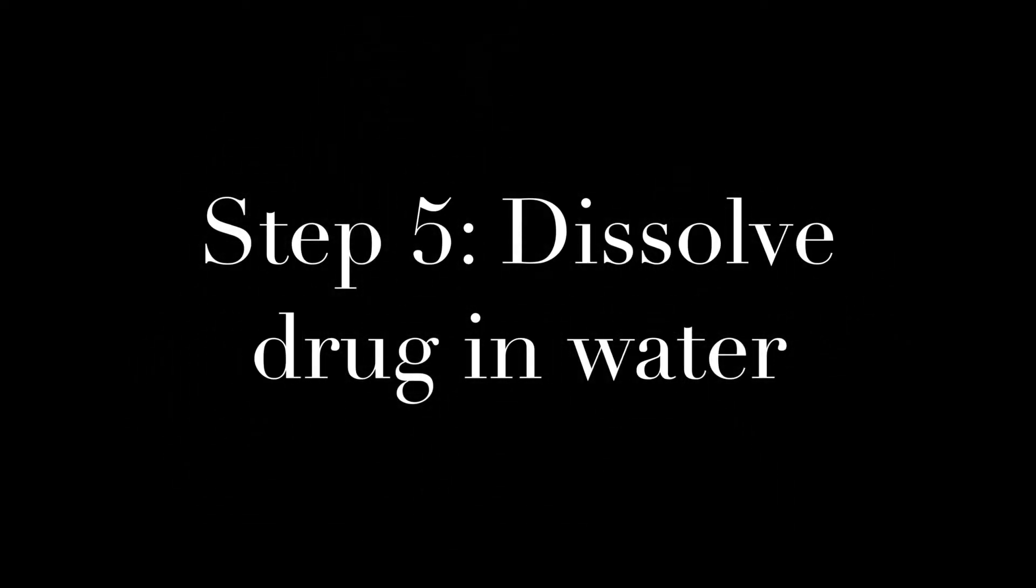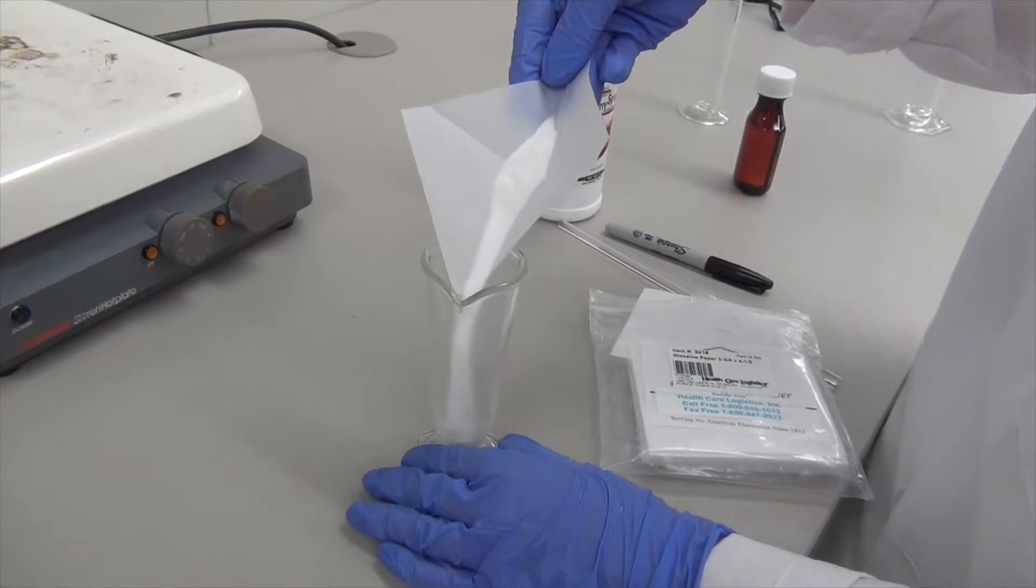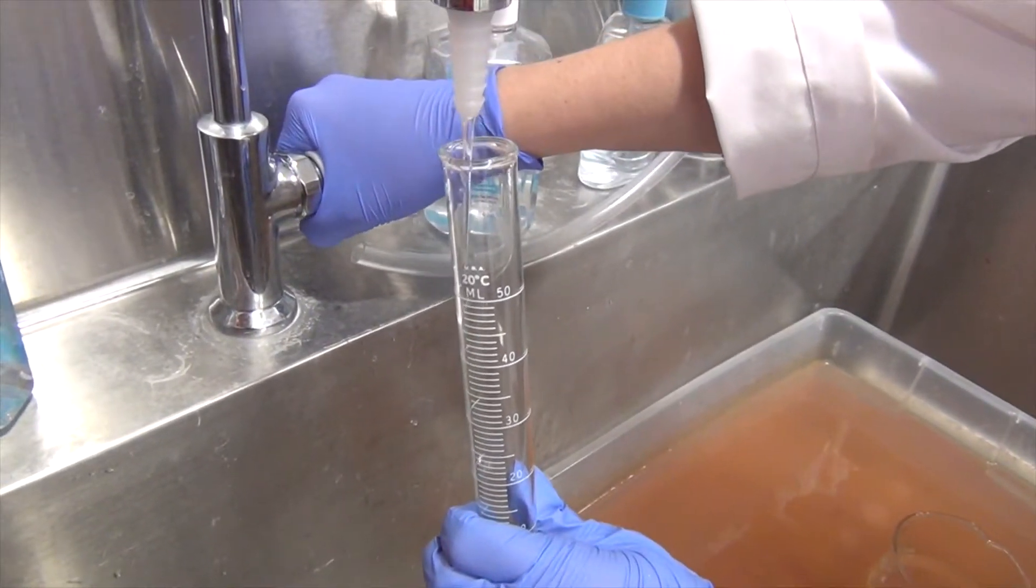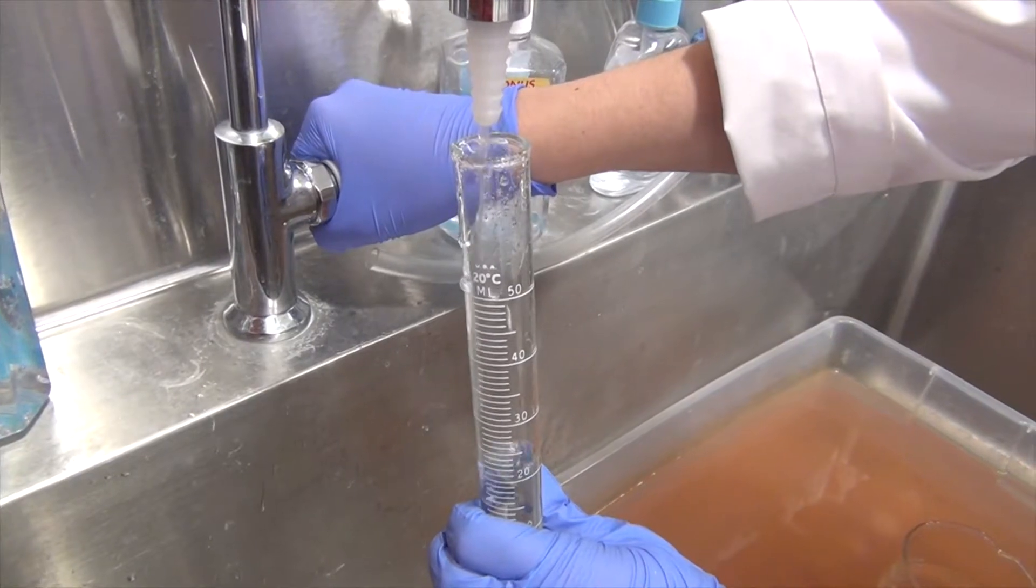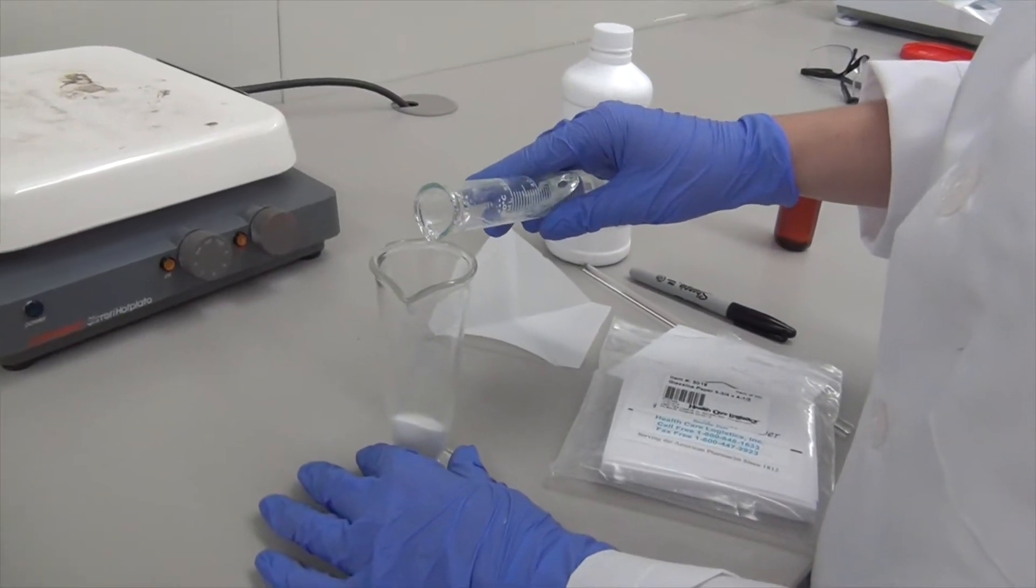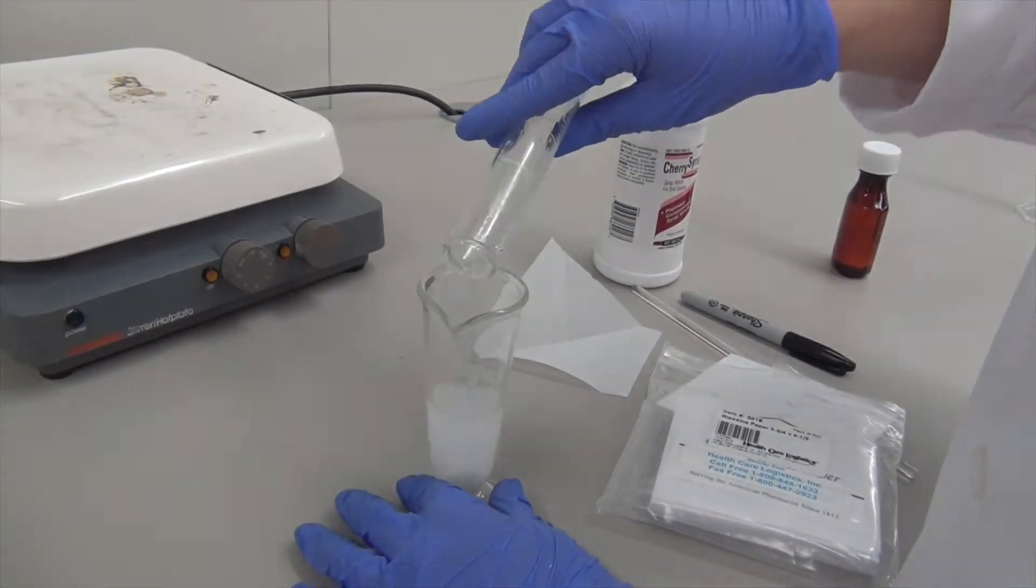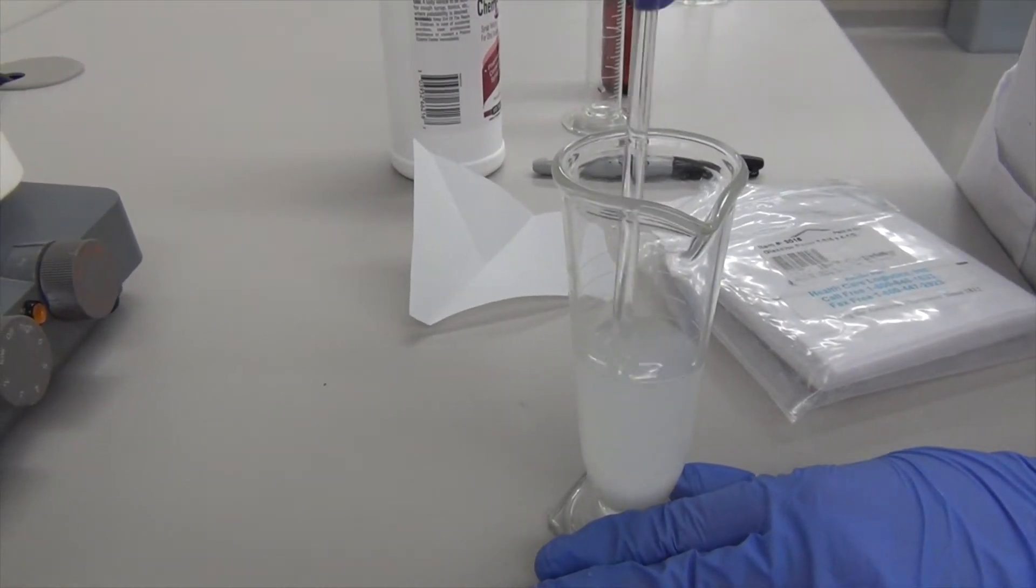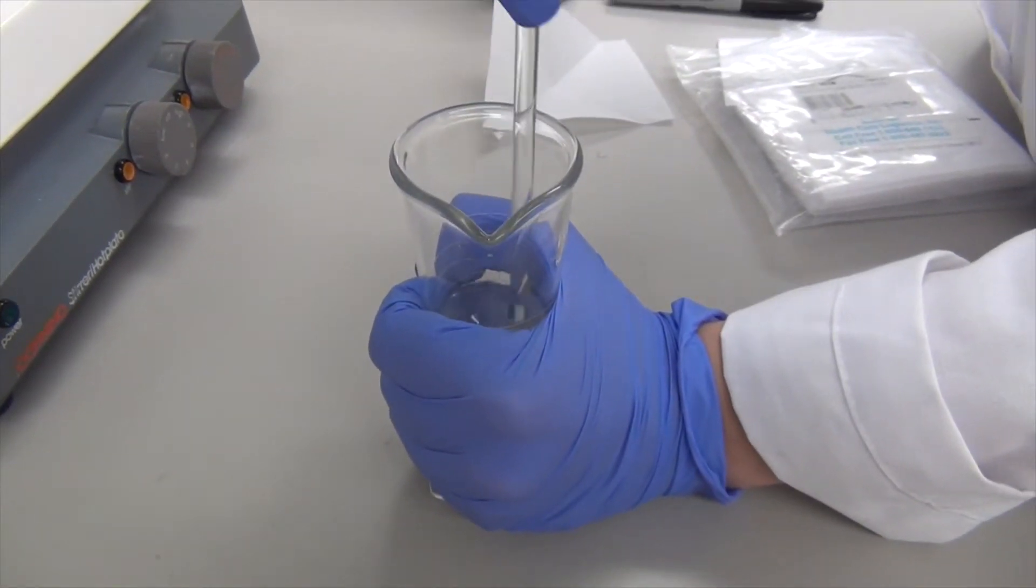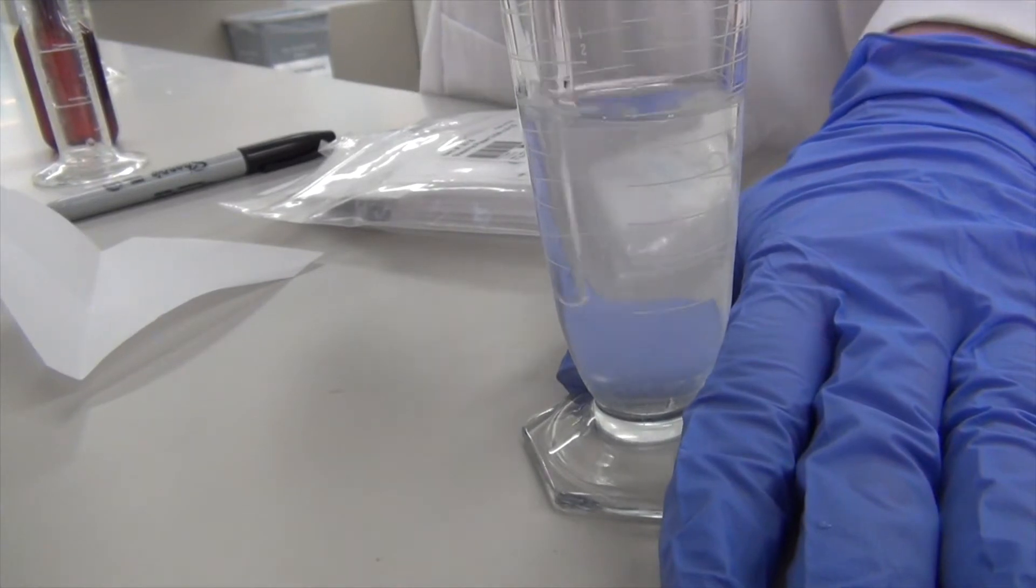For step five, you are going to dissolve the potassium gluconate in water. Add the potassium gluconate to your conical graduated cylinder. You are going to measure out 30 milliliters of DI water, which is half of the prescription volume. Add the water to the conical graduated cylinder. Begin stirring, making sure you dissolve all of the particles. This may take several minutes. Holding the conical graduated cylinder with your hand can warm the solution and make the dissolving go faster. When your solution appears clear and transparent, you have finished dissolving your drug.